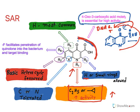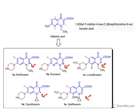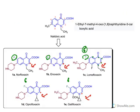At R6, position 6, fluorine is present. Fluorine facilitates the penetration of quinolones into bacteria and enhances target binding, thereby enhancing activity. That is why all marketed drugs have fluorine at position 6. At position 7 (R7), a basic heterocyclic ring is favored for activity. The piperazine ring is heterocyclic and basic in nature — since nitrogen atoms provide lone pairs of electrons, they are basic. So a basic heterocyclic ring at R7 is required to enhance activity.